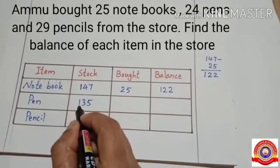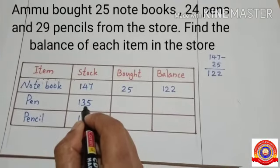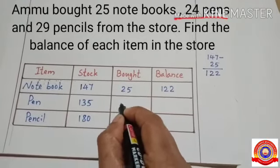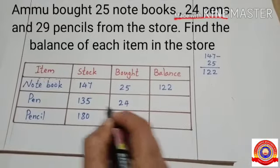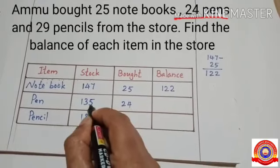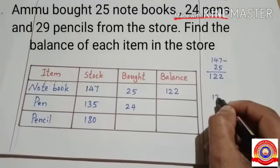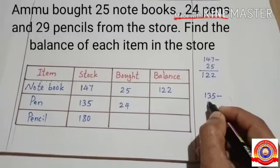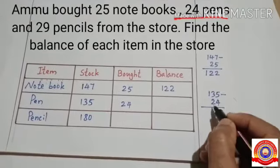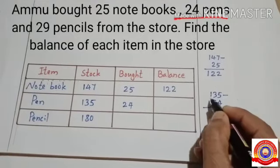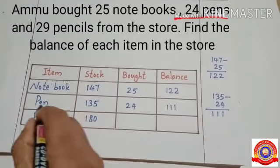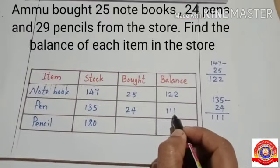Now we have 135 pens. Ammu bought how many pens? Yes, 24. To find the balance number of pens, subtract 24 from 135. 135 minus 24: 5 minus 4 is 1, 3 minus 2 is 1, then write the remaining 1. So the balance number of pens is 111.